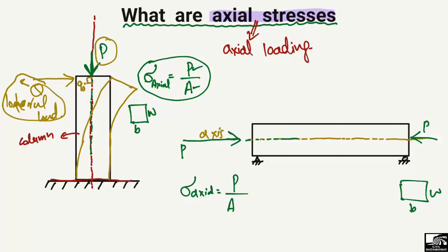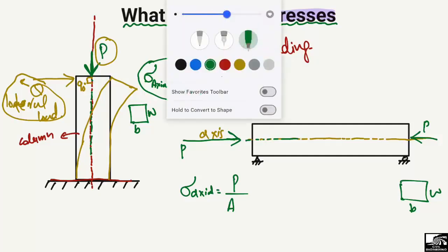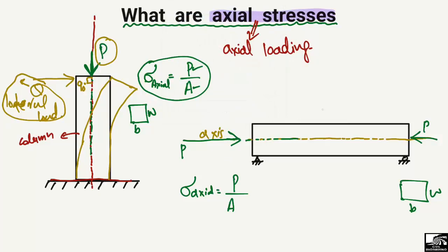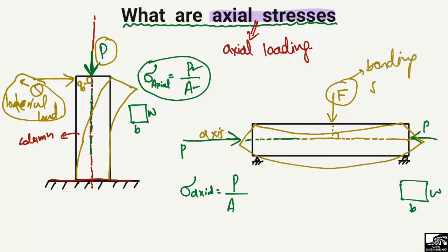If another type of loading acts perpendicular to the axis of the beam, represented by load A, this load will not compress or elongate the beam. Instead, it will cause the beam to bend. The stresses created due to this perpendicular load will be known as bending stresses, not axial stresses.